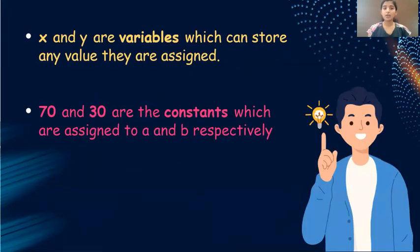Here x and y are variables which can store any value that are assigned, whereas 70 and 30 are constants which are assigned to x and y respectively.